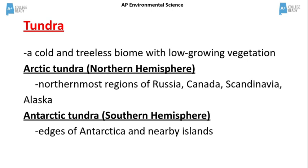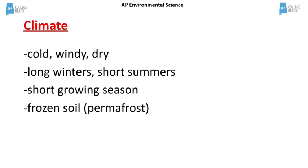The Antarctic tundra in the southern hemisphere is located along the edges of Antarctica and nearby islands. The climate in the tundra is cold, windy, and dry. The winters are long and the summers are short, with short growing seasons. The soil is characterized by permafrost, which is permanently frozen soil.